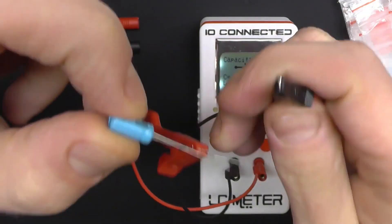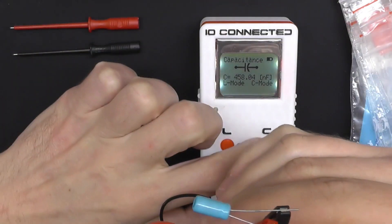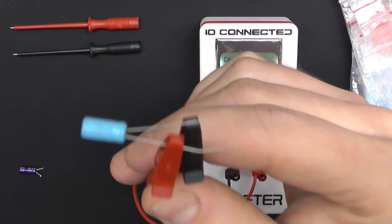The next one is also an electrolytic capacitor. Its value should be around 0.22 microfarads or 220 nanofarads.